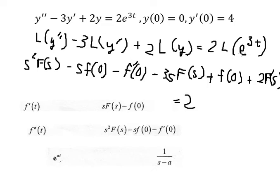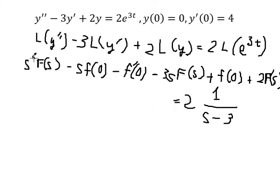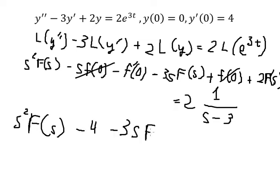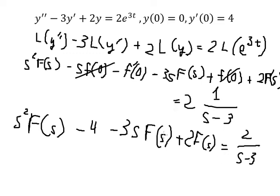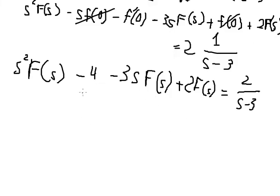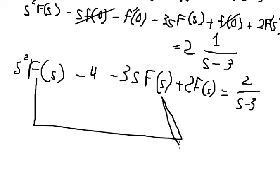For the e to the power of 3t term, that corresponds to 1 over (s minus 3). Now we simplify. This one gives zero so we cancel it, and this one gives zero so we cancel it as well. We are left with the remaining terms, and moving negative 4 to the right, we can do factorization on F(s).